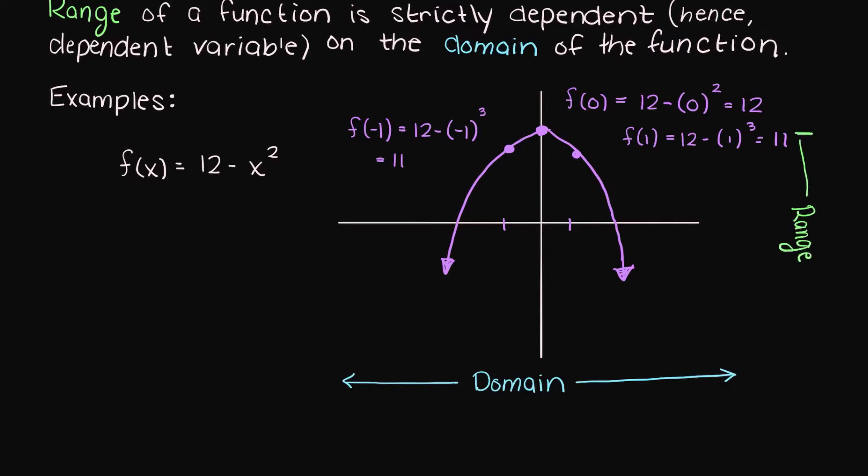Therefore our domain is all real numbers and the range is represented by capital R, colon, round bracket, negative infinity to 12, square bracket.